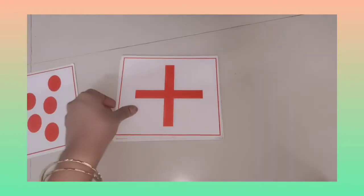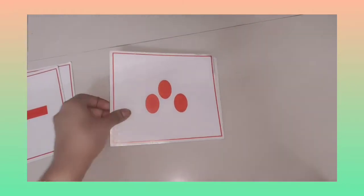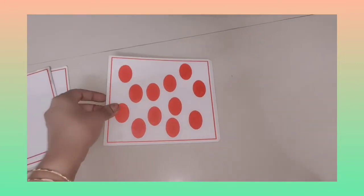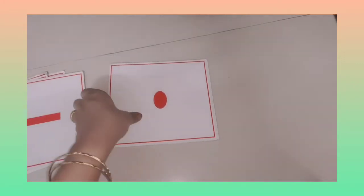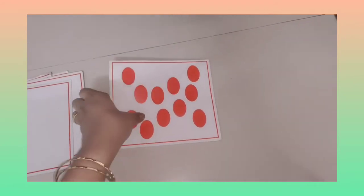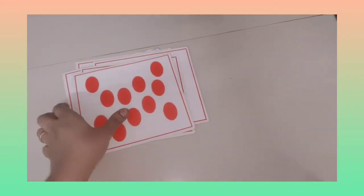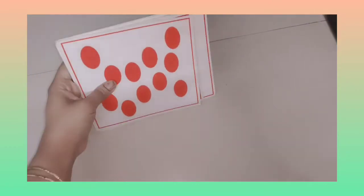9 plus 3 is equal to 12. Minus 1 is equal to 11. This becomes a two-step equation.